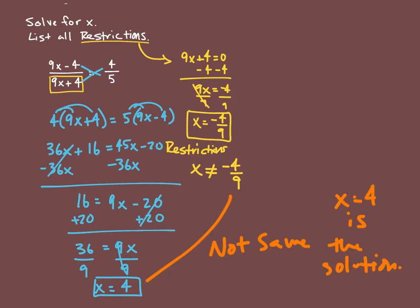You want to make sure that if these are the same, we would call this an extraneous solution. Meaning that we get this value algebraically by solving this for x, but it doesn't fit. It would make the equation untrue.